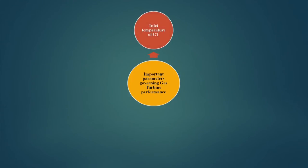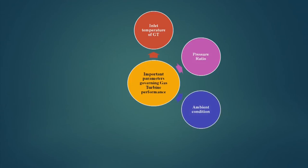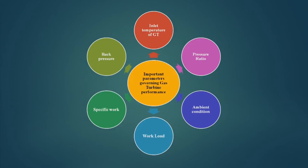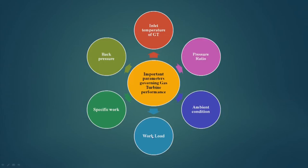Now let us see the important parameters governing gas turbine performance: inlet temperature to the GT, pressure ratio, ambient conditions, workload, specific work, and back pressure. These are the different parameters which affect the running of a gas turbine. We are discussing this because when we integrate the gas turbine with the process, we should know how the gas turbine works and what the different important parameters affecting its performance are.